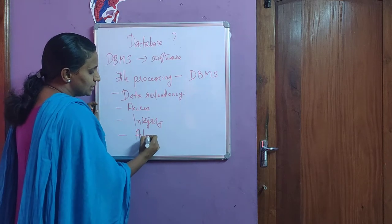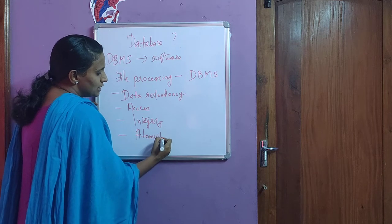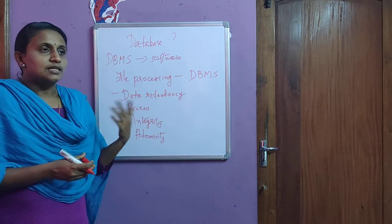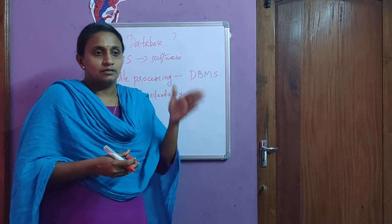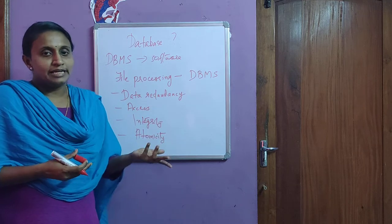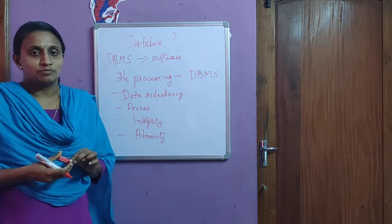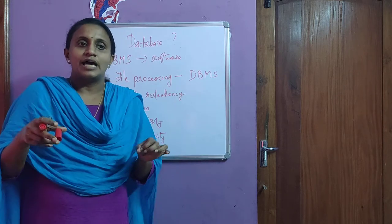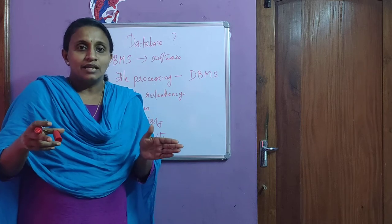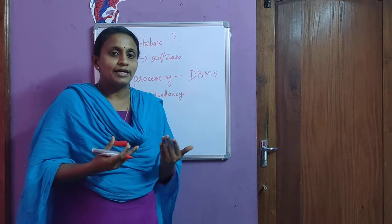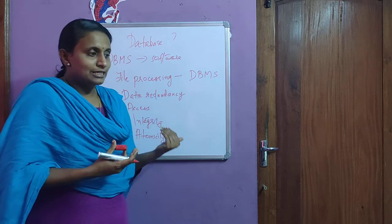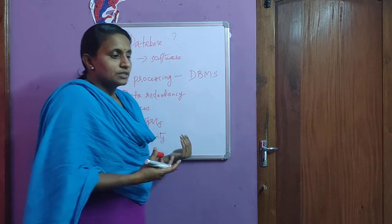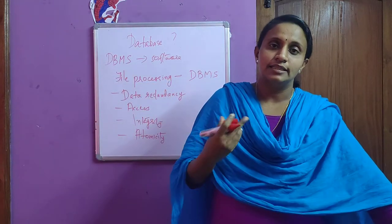The next disadvantage is atomicity. Atomicity means if a transaction occurs, it must occur in full or not at all. For example, if you are transferring an amount from one account to another and that transaction breaks in the middle, in traditional file processing it is difficult to roll back to the previous situation. But in a database management system, it is very easy to roll back to the previous state.